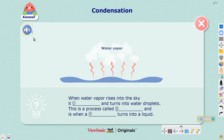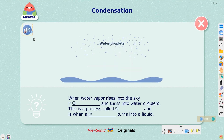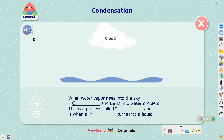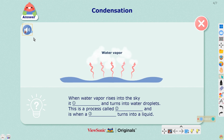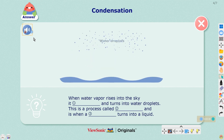The gas, which is called water vapor, rises into the atmosphere and eventually cools and turns into tiny water droplets. Together, the water droplets make up clouds that are visible in the sky.